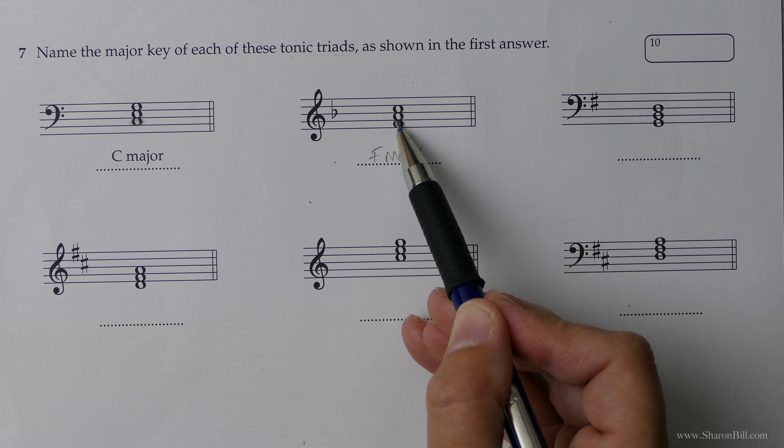So we already know that C major has a key signature of nothing. So we know that that's C major. And then if we check in the treble clef. F, A, C. There's our tonic. The bottom note, C, E, G. Is our tonic triad. The first, the third and the fifth steps of the scale.